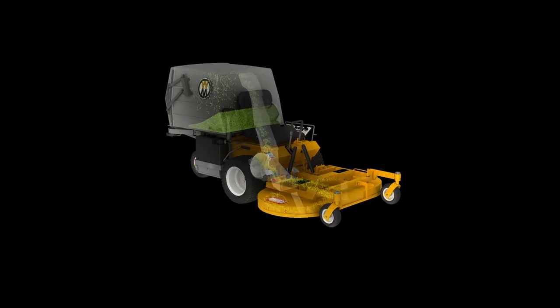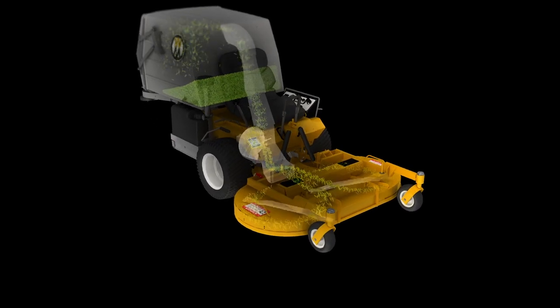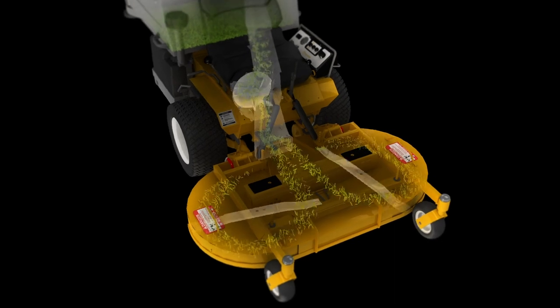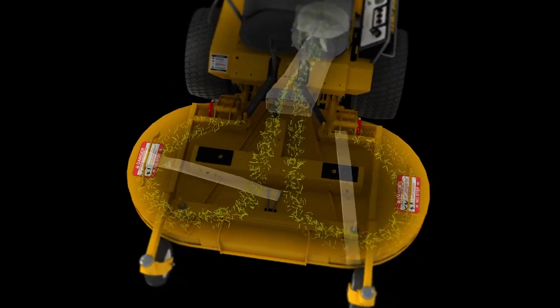The GHS system begins with the mowing deck. Walker collection decks come in sizes ranging from 36 to 52 inches and feature dual gear driven counter rotating mowing blades.